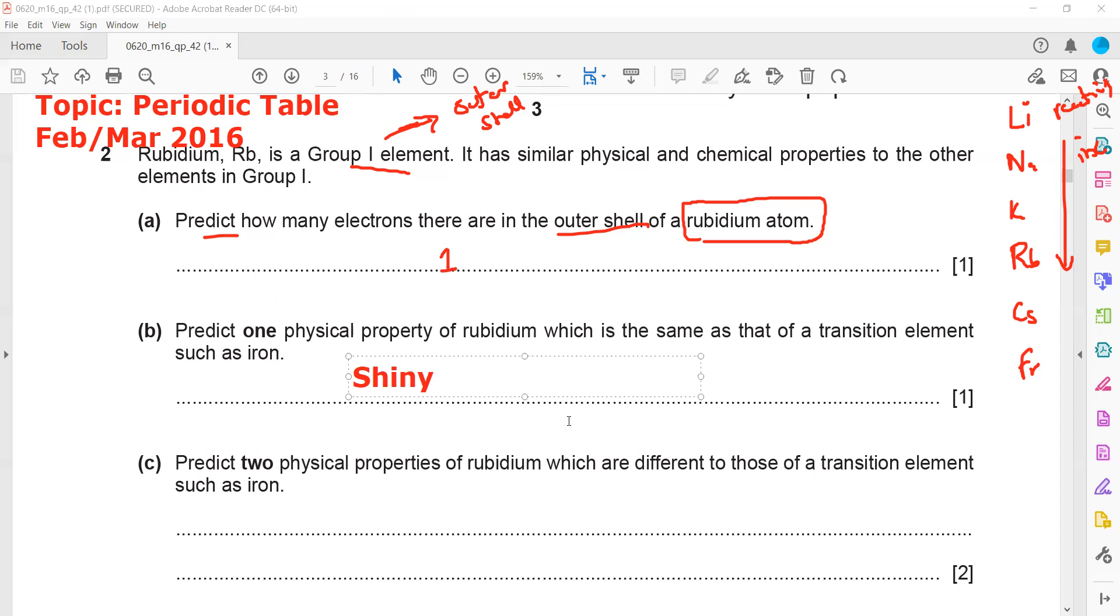You can also mention conduct electricity. That is a physical property, there is no chemical change. All metals can conduct electricity.